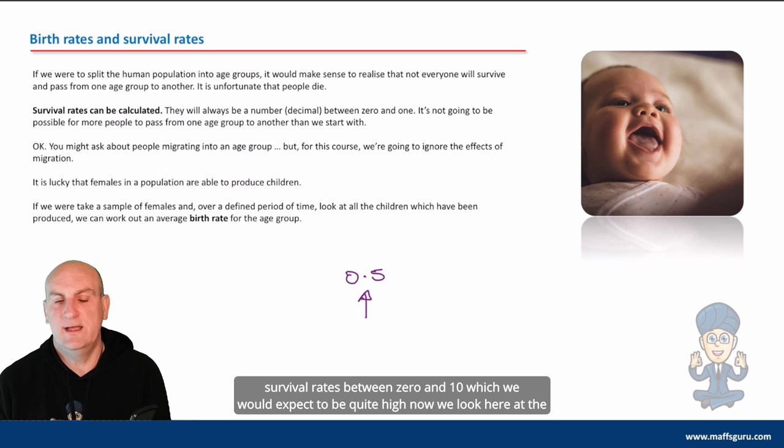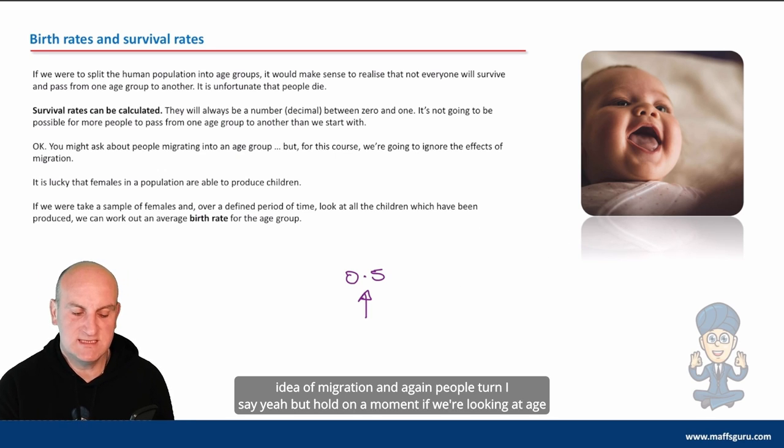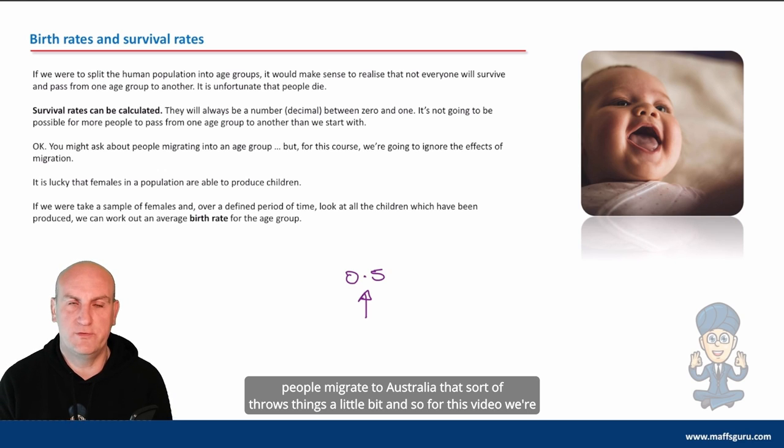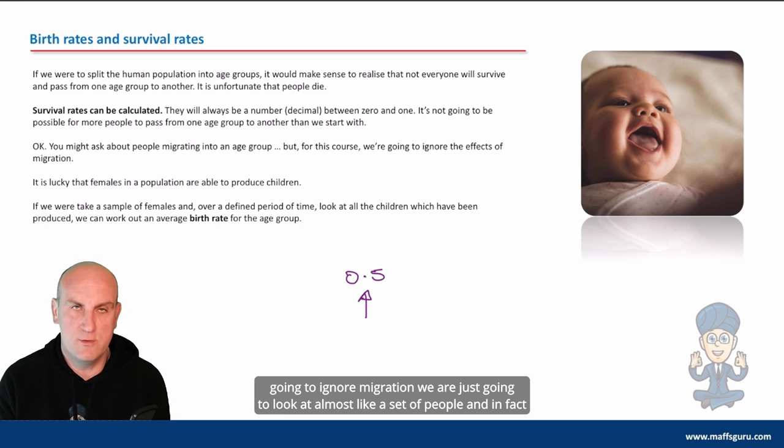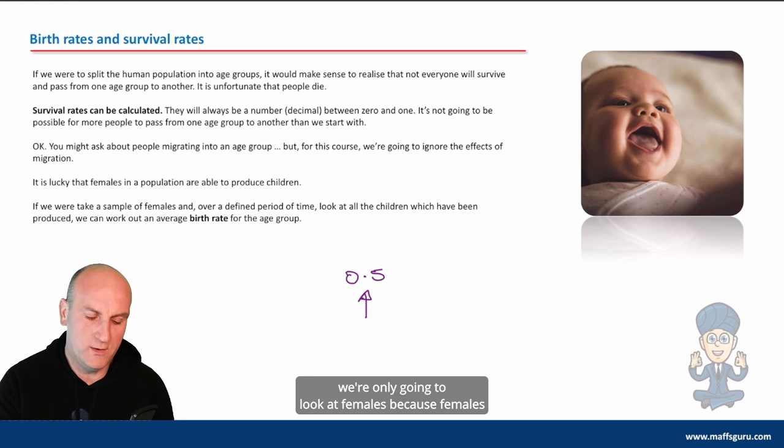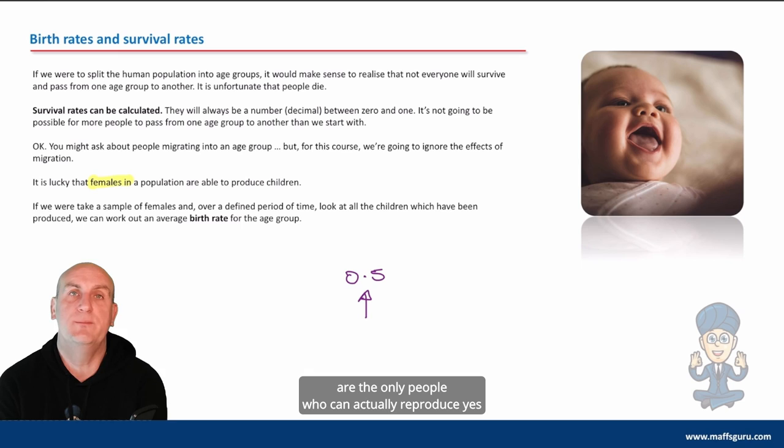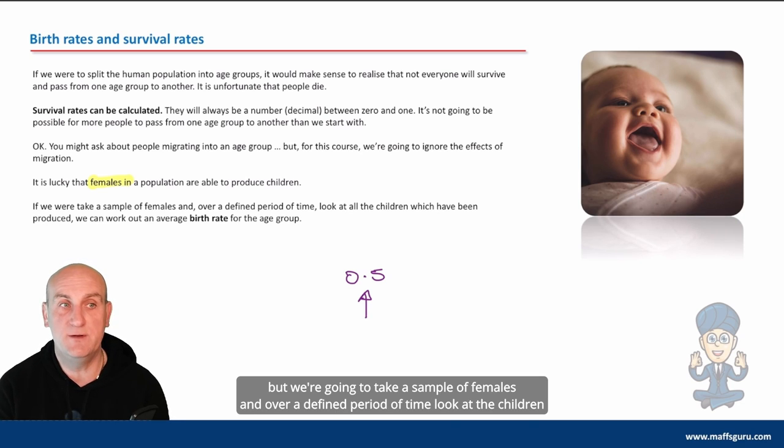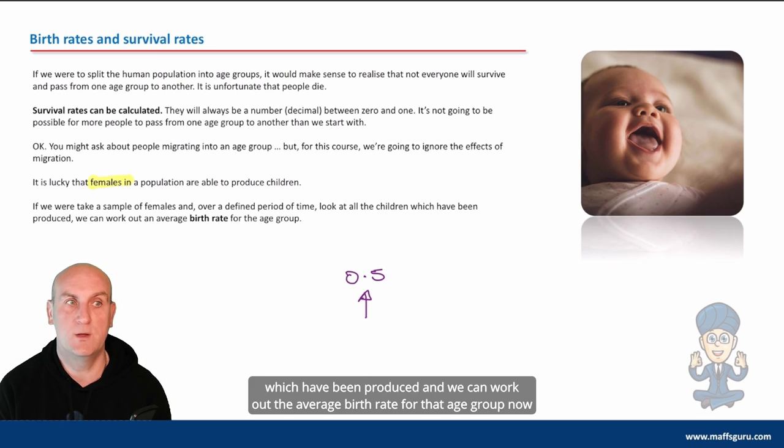Now, we look here at the idea of migration, and people turn around and say, if we're looking at age groups and people joining age groups, we could look at migration. In Australia, obviously, a lot of people migrate to Australia. That sort of throws things a little bit, and so for this video, we're going to ignore migration. We are just going to look at almost like a set of people, and in fact, we're only going to look at females, because females are the only people who can actually reproduce. I know they generally need males, but not all cases, and so we'll leave that one there as well. But we're going to take a sample of females, and over a defined period of time, look at the children which have been produced, and we can work out the average birth rate for that age group.